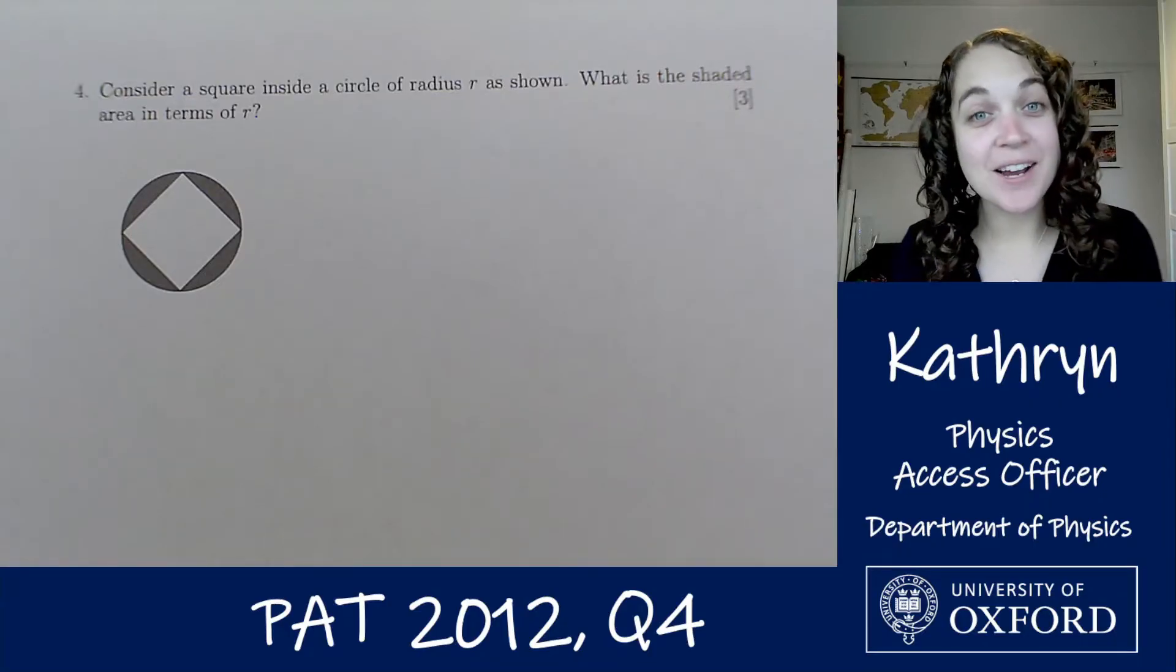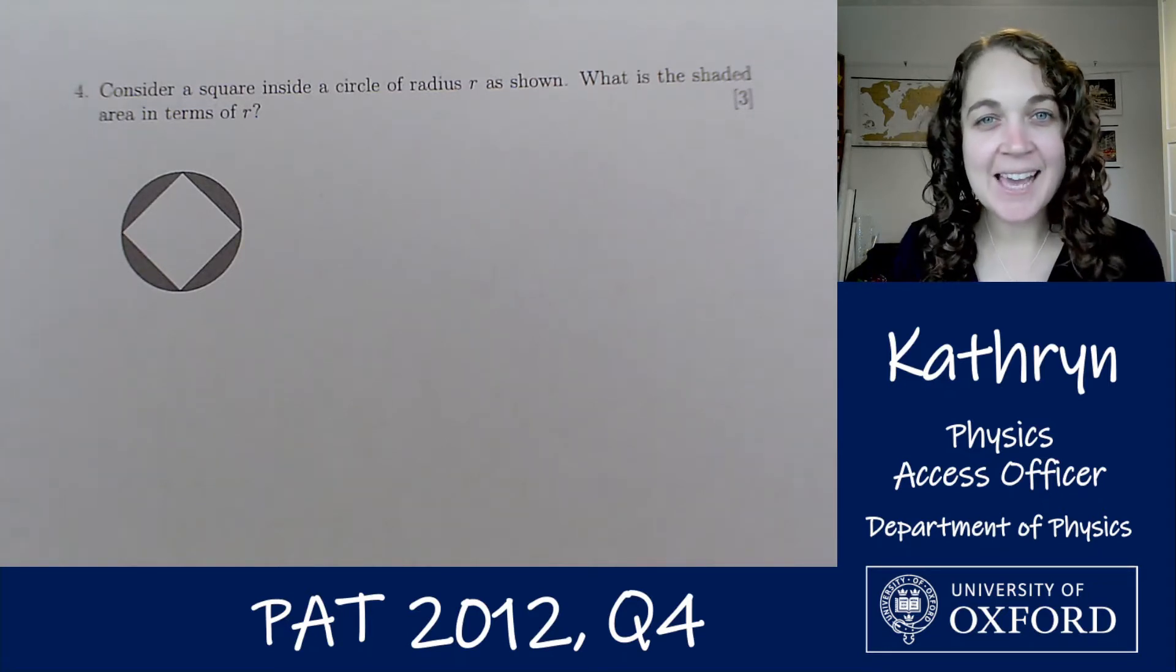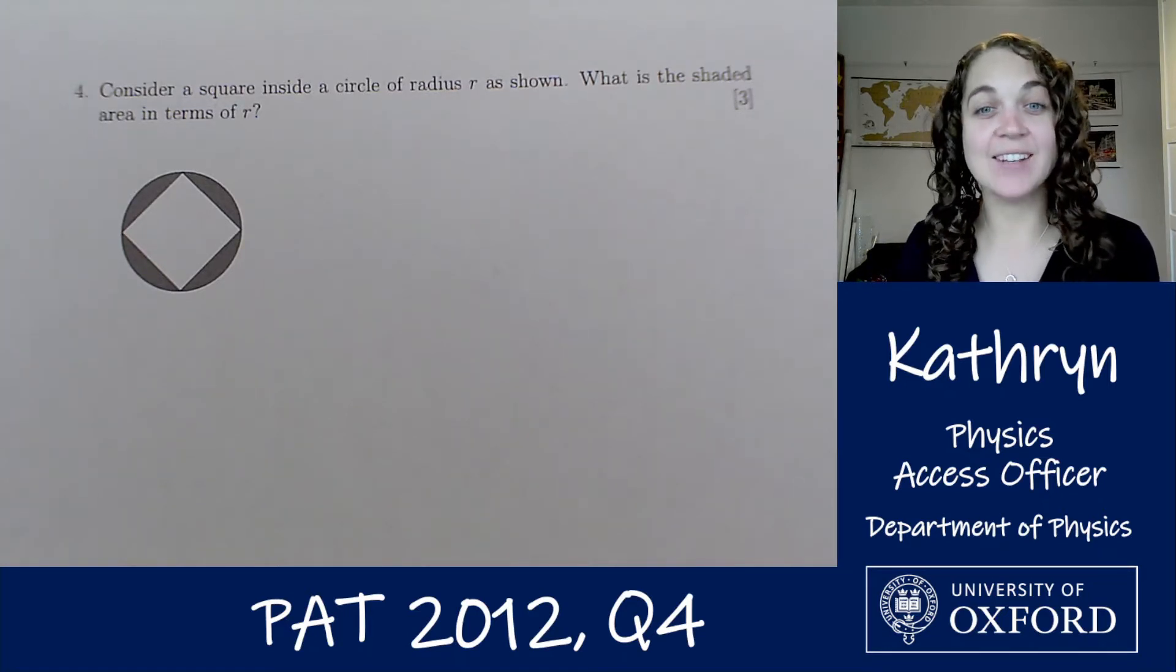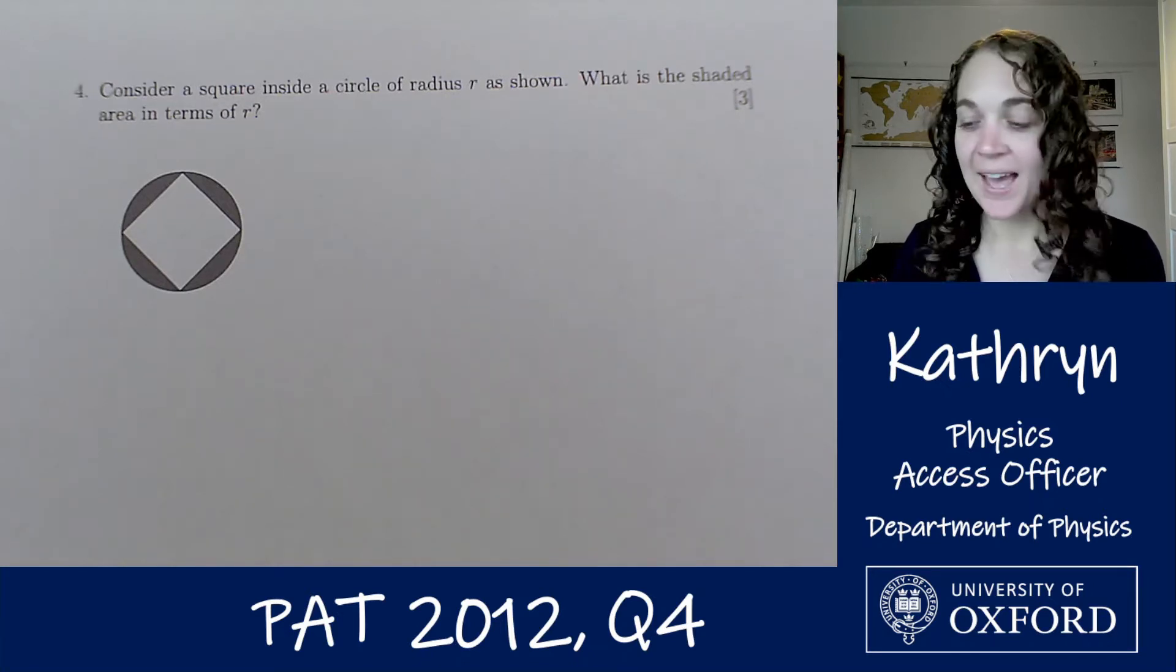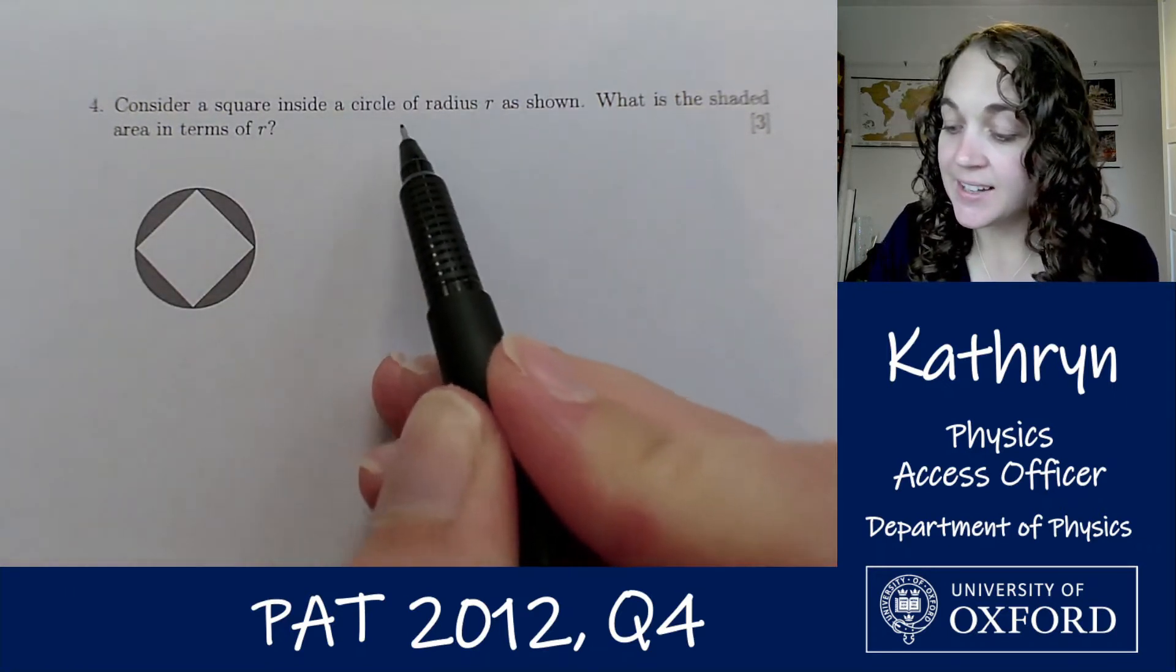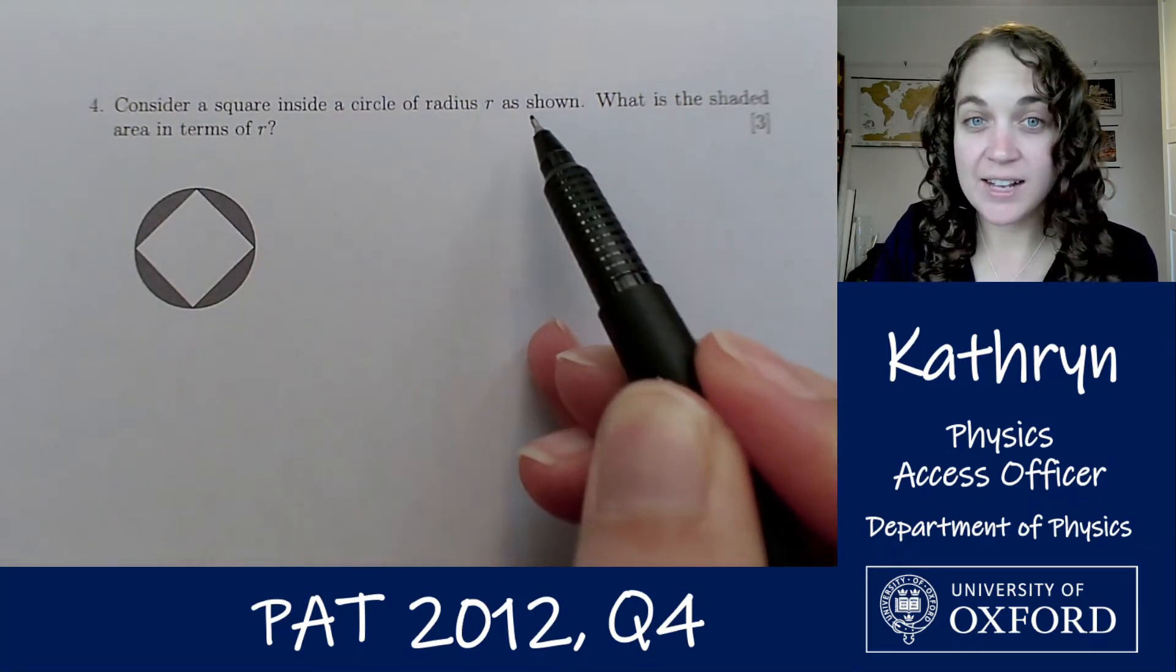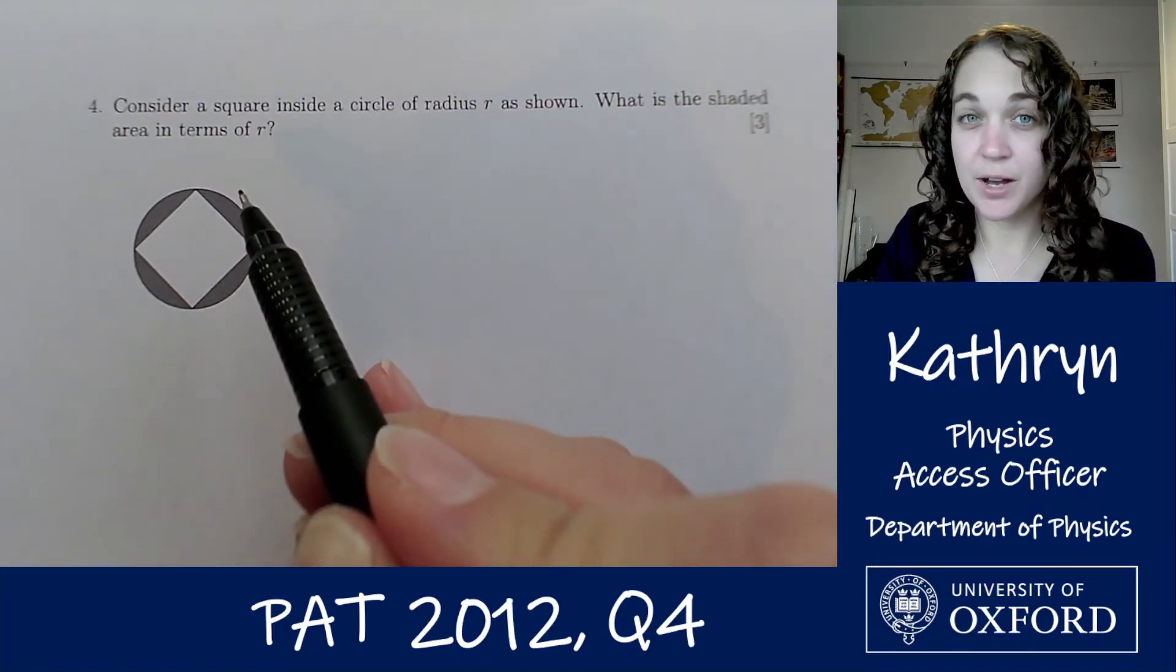Hello everyone, I'm Katherine, I'm the Access Officer for the Department of Physics at Oxford University and today we're going to be looking at question four from the PAT 2012 paper. Consider a square inside a circle of radius r as shown. What is the shaded area in terms of r?